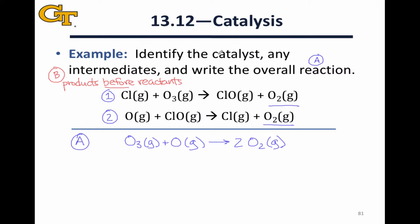An intermediate is something that's generated in the course of a mechanism, but consumed before the products are formed. So an intermediate appears in the middle of a mechanism, you can think of it that way, and disappears by the time we get to the products.